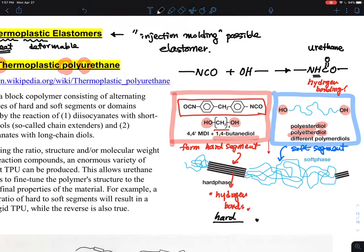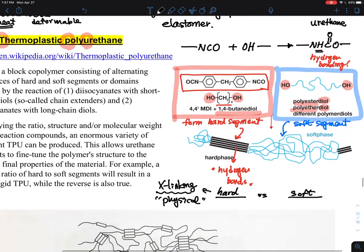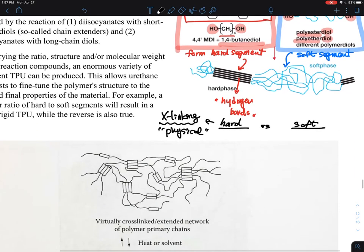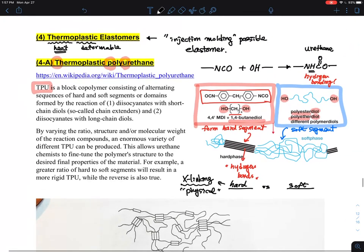The hard phases work as a sort of unit of cross-linking, but here this cross-linking is physical cross-linking. When you heat it up, you can make this cross-linking softer. This is the unique nature of thermoplastic elastomer—physical cross-linking forming the hard domain.